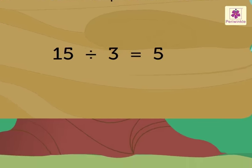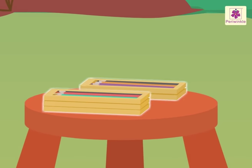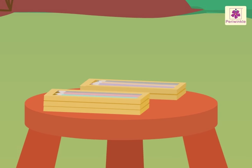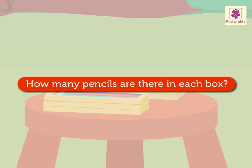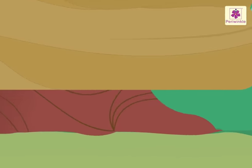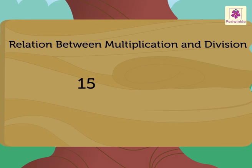Given that there are 5 boxes and 15 pencils, how many pencils are there in each box? Here, we divide 15 by 5 to find the quotient. So, 15 divided by 5 is equal to 3.